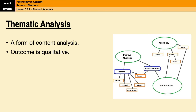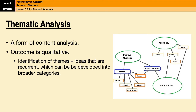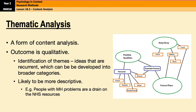For example, people with mental health problems might be represented in newspapers as a drain on the resources of the NHS. These themes can then be developed into broader categories, such as stereotyping, treatment, or control. When the researcher is satisfied that the themes they've developed cover most aspects of the data they're analyzing, they can then collect a new set of data to test the validity of the themes and the categories.